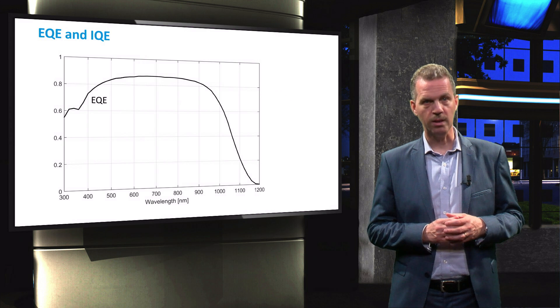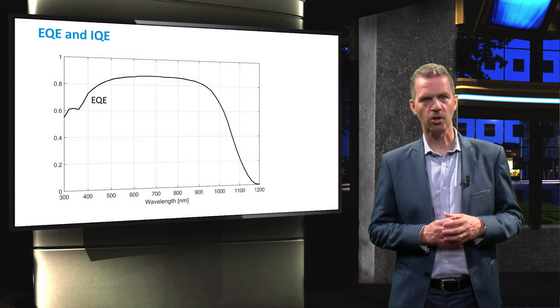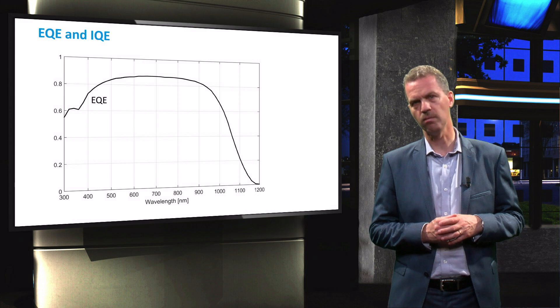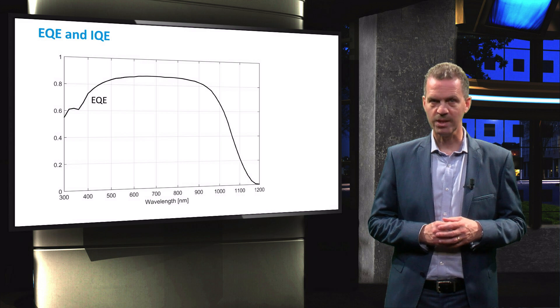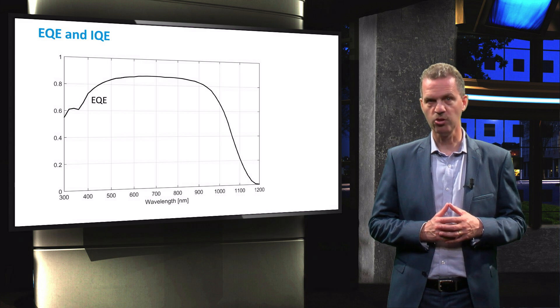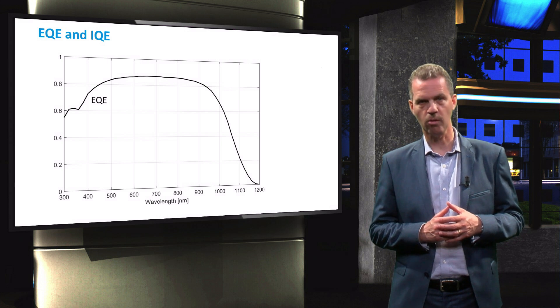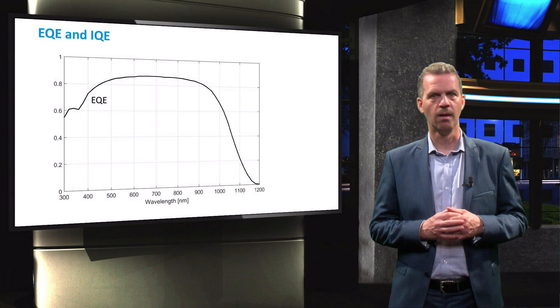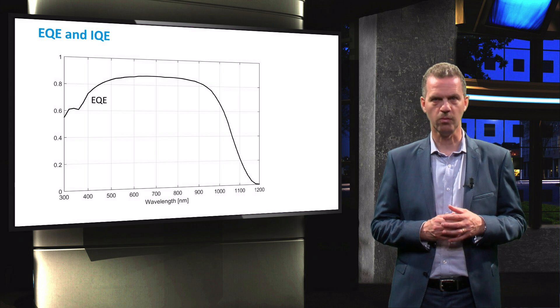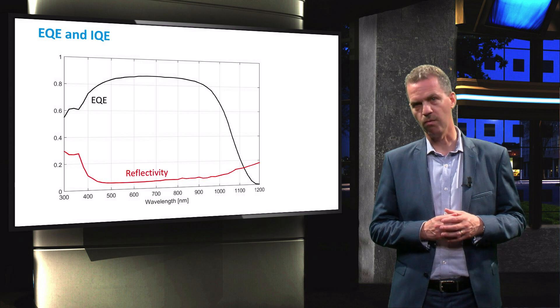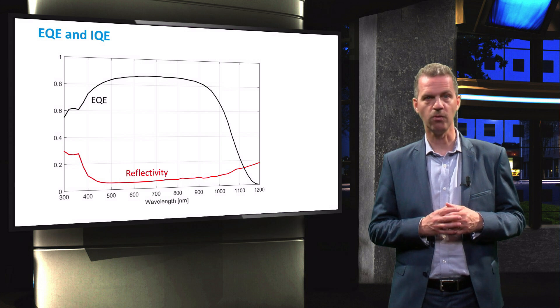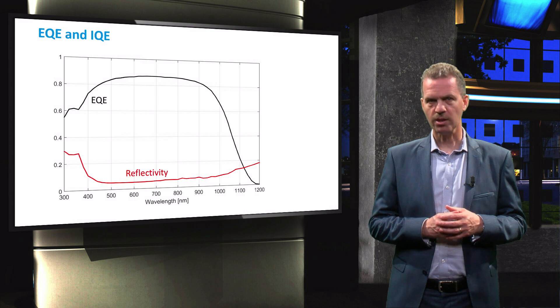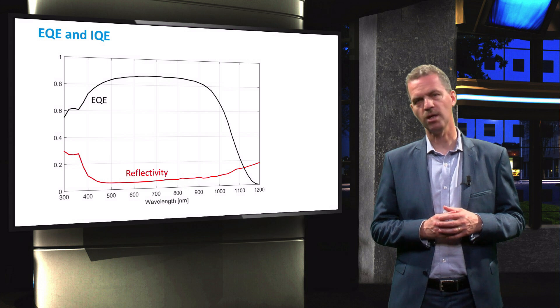This graph shows an EQE curve of a crystalline silicon solar cell, which typically extends from 300 all the way up to 1200 nanometers. The area above the curve represents a fraction of photons that does not lead to charge collected at the terminals of the cell. Possible reasons are the charge generated by these photons is lost due to recombination in the cell, or that photons are reflected, meaning that some of the photons are actually not absorbed in the cell. In a later video we will discuss how the reflectivity of a solar cell can be measured.